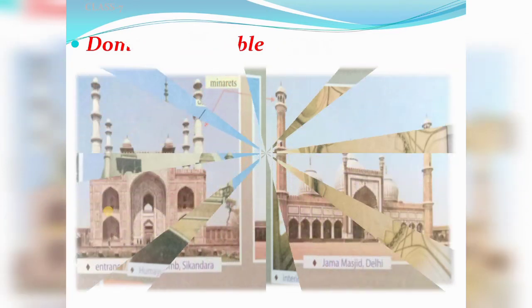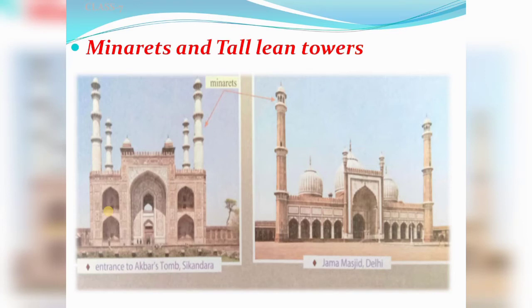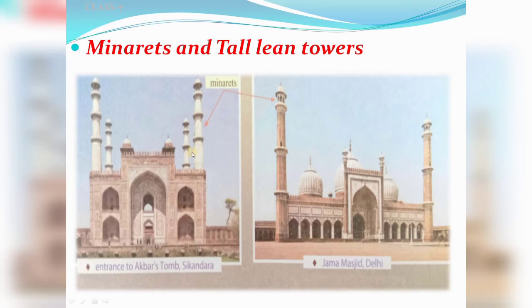Moving on — let's discuss minarets and tall, lean towers. Ye bahut zyada common hai. The use of minar or tall and lean towers, based on the system of superimposition of decreasing size, was very common. At the time of the Mughals, this decreasing-tower concept was widely used. Examples include the Jama Masjid's lean towers, the entrance to Akbar's tomb, and Qutub Minar — agar aap dhyan se dekhenge, toh Qutub Minar mein bhi decreasing order mein hi stories bani gayi hain.